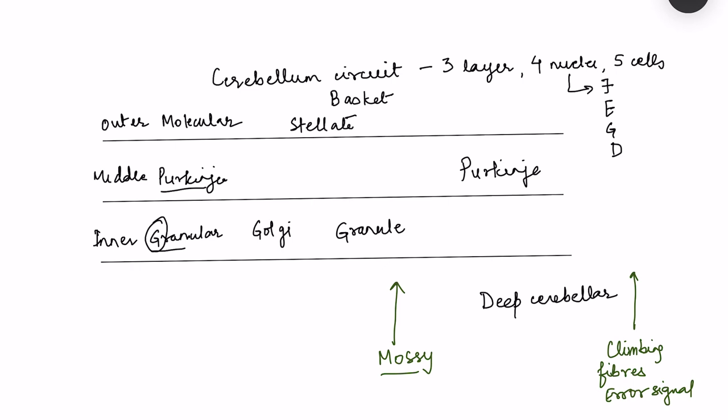Mossy and climbing fibers act on the deep cerebellar nuclei in two ways. First, they directly excite the deep cerebellar nuclei — this is an excitatory connection. Second, they also act on Purkinje cells, but Purkinje cells are inhibitory and inhibit the deep cerebellar nuclei. Both climbing and mossy fibers excite the deep cerebellar nuclei and excite Purkinje cells, but Purkinje cells are inhibitory.